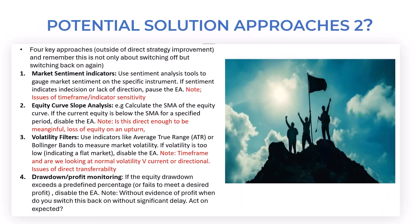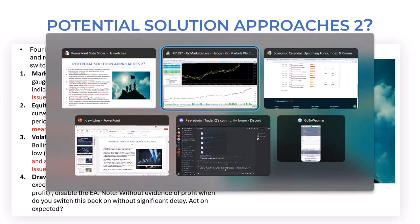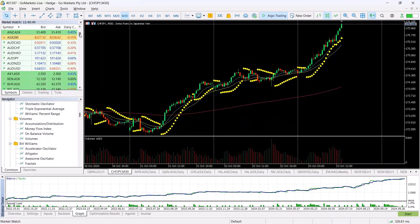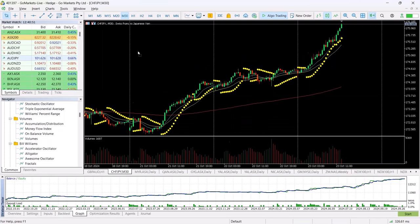Outside of direct strategy improvement, we can look at market sentiment — time frame indications, sensitivity — worthwhile keeping an eye on. We can use sentiment analysis tools if there's a lack of direction and markets are in a psychological state of indecision — for example, moving from an uptrend to a sideways trend — because we can always get back in. I gave you the example of the AUD/JPY.